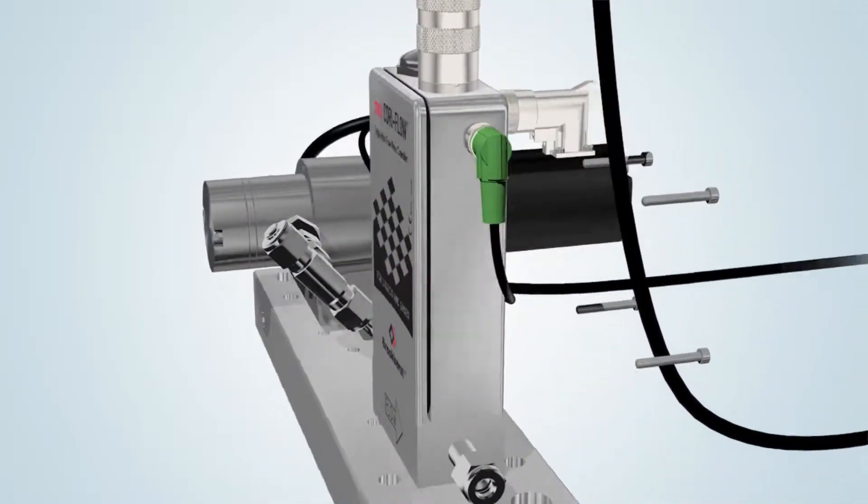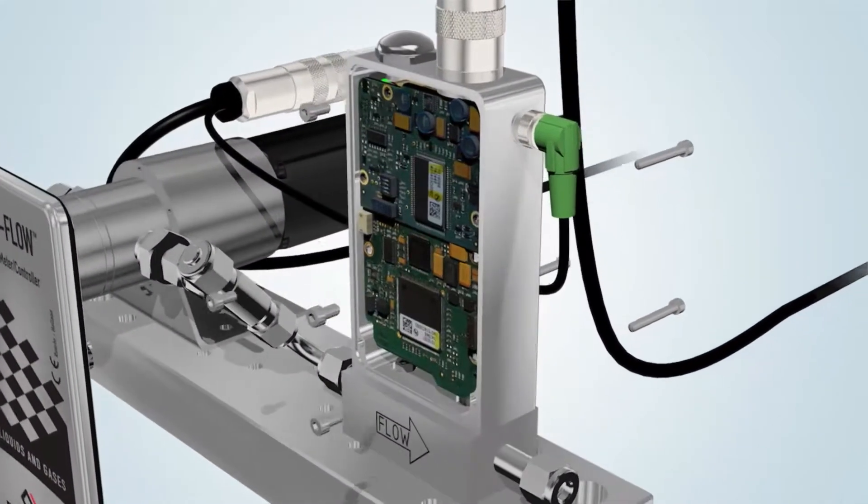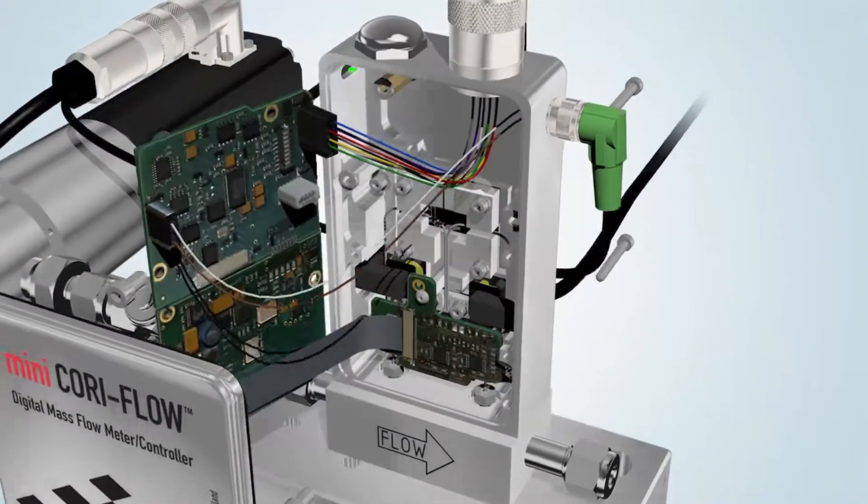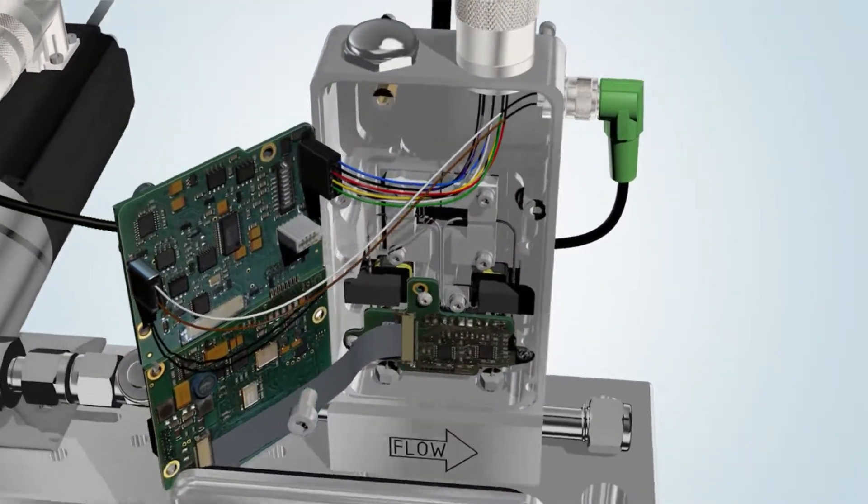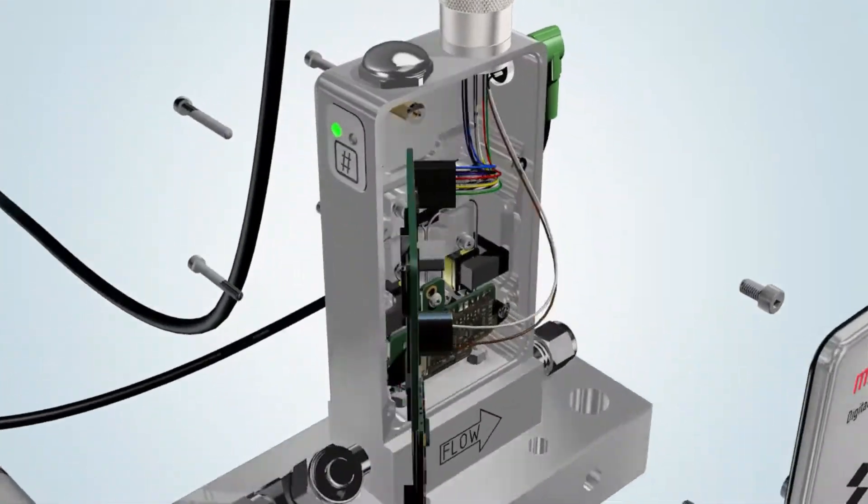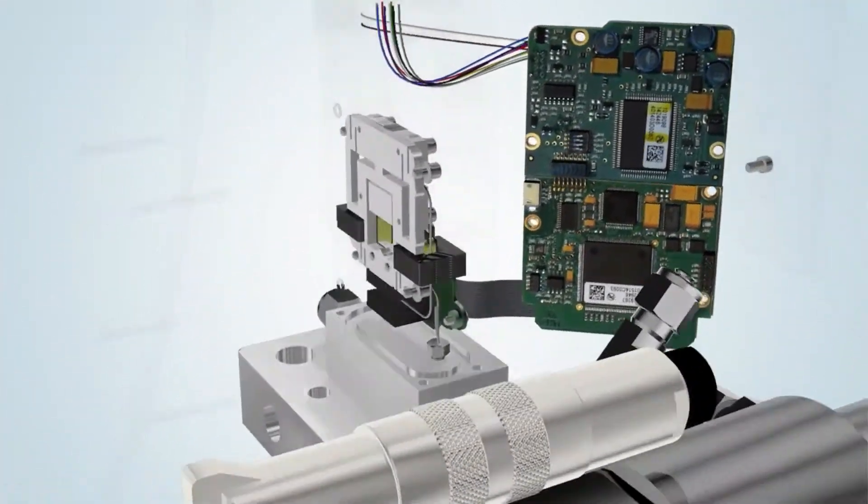Inside the robust Mini CoriFlow housing are the digital electronics, optical sensor and sensor tube. The internal diameter of the sensor ranges from 0.25 mm to 3.1 mm.